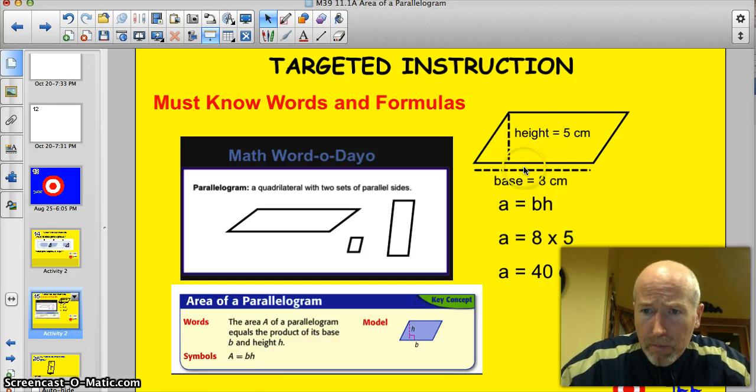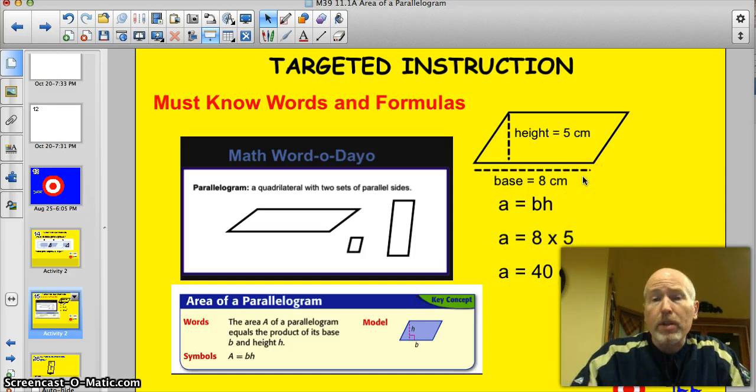The official formula for finding the area of a parallelogram is A equals BH. So here's a parallelogram. We've got the base and we've got the height. Let's apply the formula. So A equals BH. So A, the area equals the base, which is eight, times five. So the area equals 40, and of course that's in area, so it's centimeters squared.